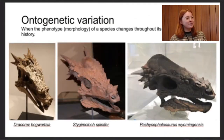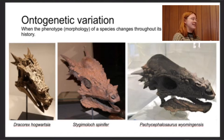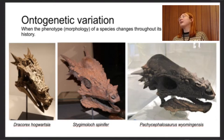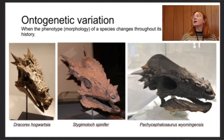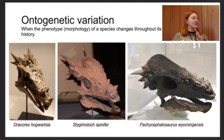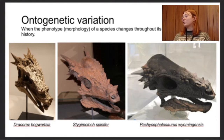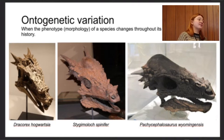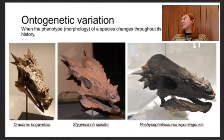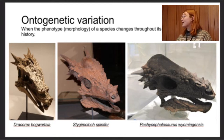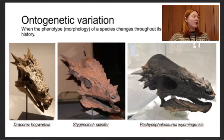We're going to talk about ontogenetic variation as a way that can mislead both species differentiation and male-to-female differentiation. Ontogenetic variation is when the phenotype — the morphology, what the organism looks like externally — varies and changes throughout development and with age. We have three dinosaurs: Dracorex, Stygimoloch, and Pachycephalosaurus. These were previously described as three distinct species of pachycephalosaur, and they do look quite different — different extent of ornamentation, different skull sizes.